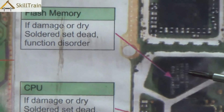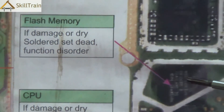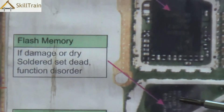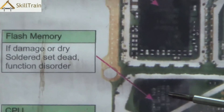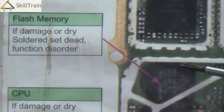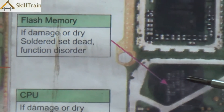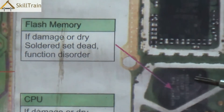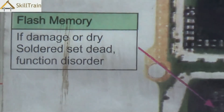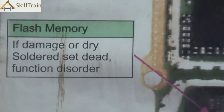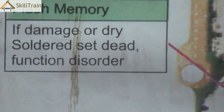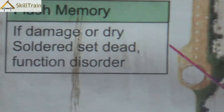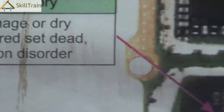Right above that is the memory IC. This is where the mobile phone software is saved and some of the internal applications are stored. If there is a problem in this part, the mobile phone might become dead or it could result in function disorders or application disorders on your mobile phone.